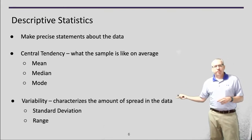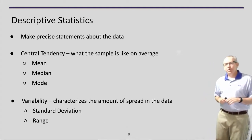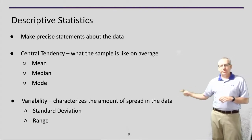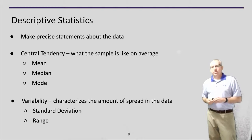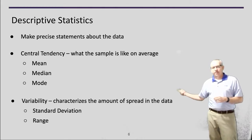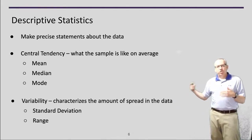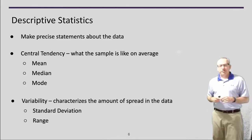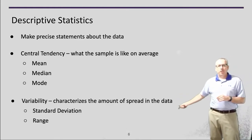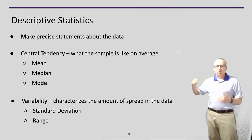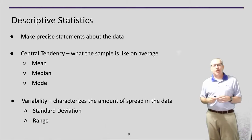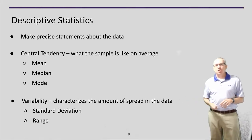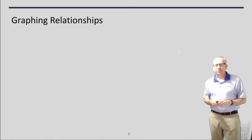Along with central tendency, we have variability, which gives us an idea of how widespread the data is. We can look at standard deviation, which shows how far things vary from the central tendency, or the range — the minimum and maximum. Depending on your data type and study, you might use different measures.